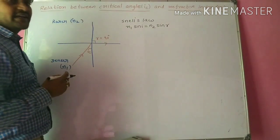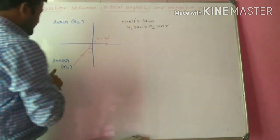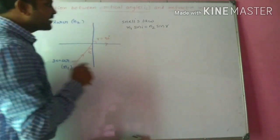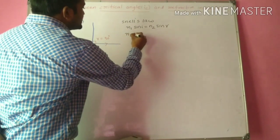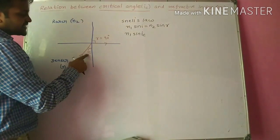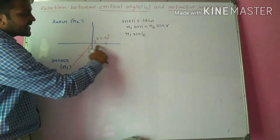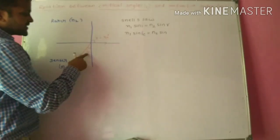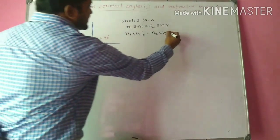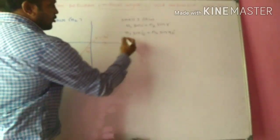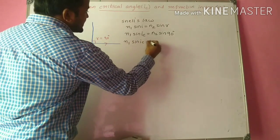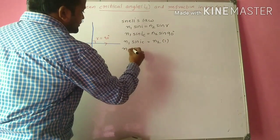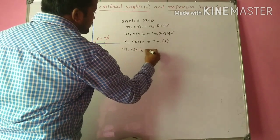N1 is the refractive index of the denser medium and N2 is the refractive index of the rarer medium. Now applying the values: the angle of incidence i equals the critical angle ic, and the angle of refraction r equals 90 degrees. So sin 90 degrees equals 1, giving us N1 sin(ic) = N2.